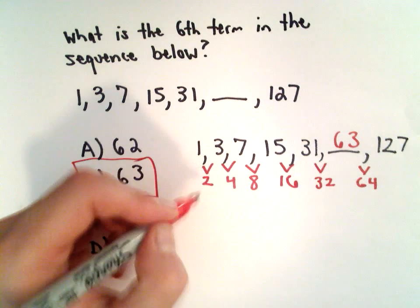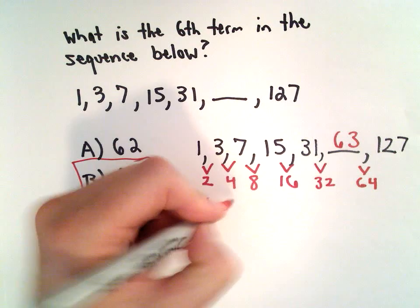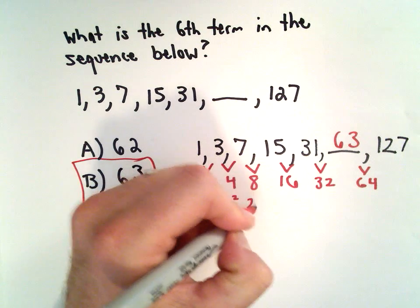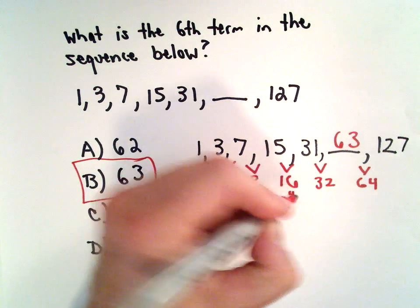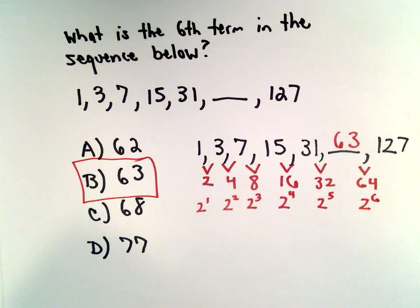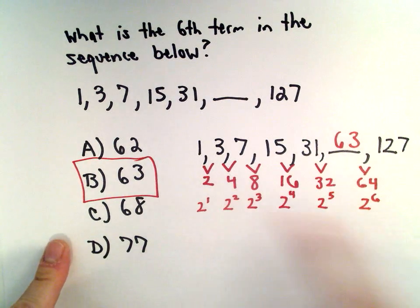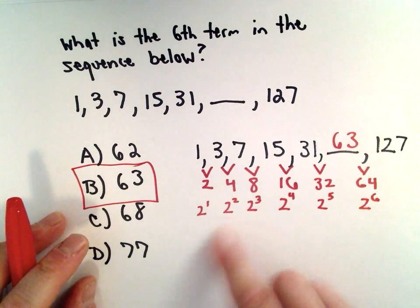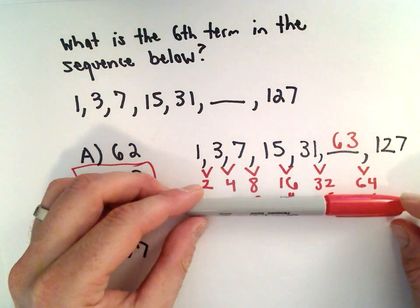Another thing to notice is you're doing powers of 2. This is 2 to the 1st, 2 to the 2nd, 2 to the 3rd, 2 to the 4th. This number is 2 to the 5th, 2 to the 6th. So the differences are powers of 2.